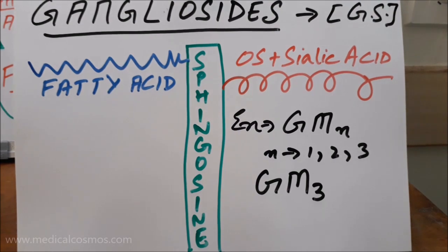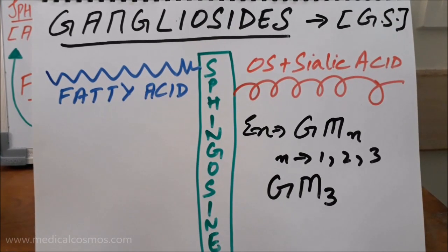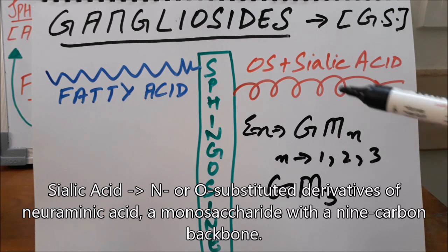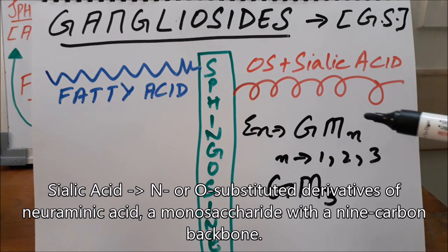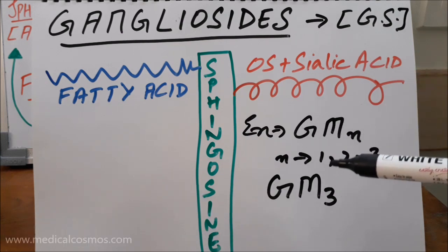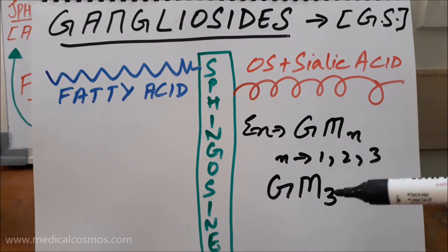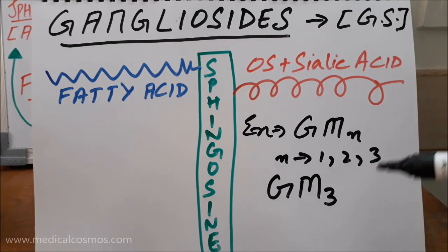Lastly, gangliosides contain sphingosine as an amine alcohol, a fatty acid, and then an oligosaccharide plus sialic acid. Sialic acid here is NANA — N-acetylneuraminic acid. Examples include GM1, GM2, GM3, where the number relates to chromatographic migration, so the naming goes GM3, GM2, GM1, and so on.